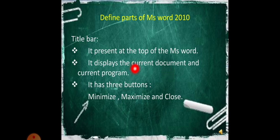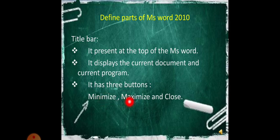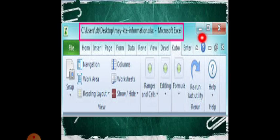Next, let's define the parts. The title bar is at the top of the software. It shows the name of the current document you are working on. It also has three buttons: Minimize, Maximize, and Close.